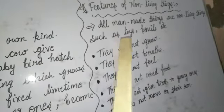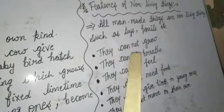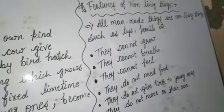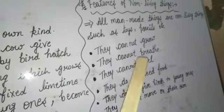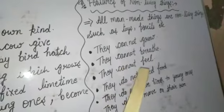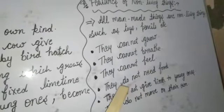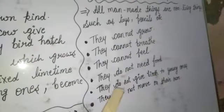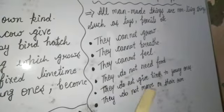जैसे कि table, chair, toy, pencil — ये सारी चीज़ें non-living हैं. ना ही तो ये grow करती हैं, ना ही ये सांस लेती हैं, और ना ही इन्हें जिन्दा रहने के लिए खाने की जरूरत होती है. Non-living things की features: they cannot grow, they cannot breathe, they cannot feel — अगर आसपास सर्दी है या गर्मी है, वो महसूस नहीं कर सकते. They do not need food. They do not give birth to young ones, and they do not move on their own.